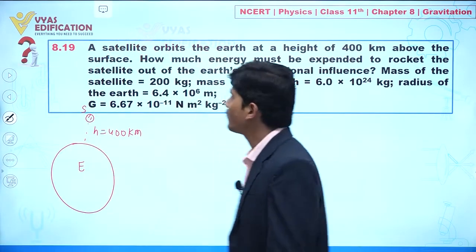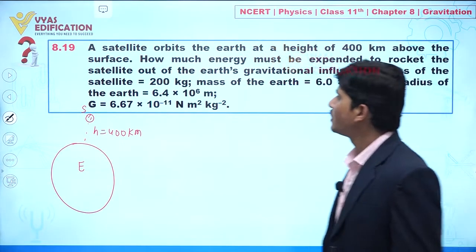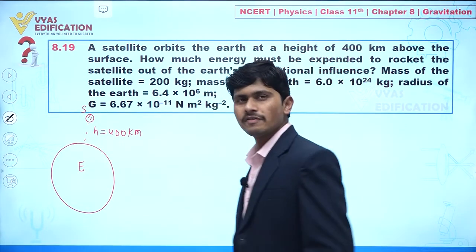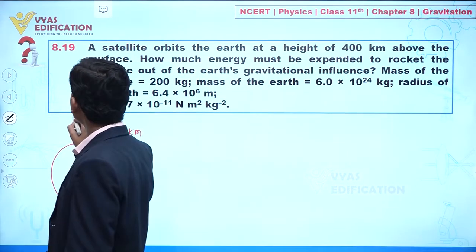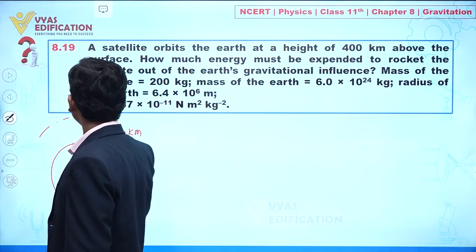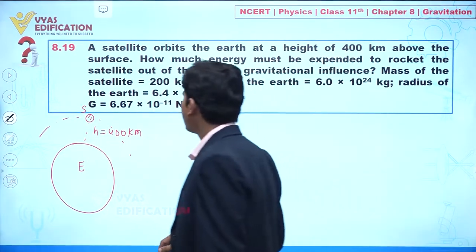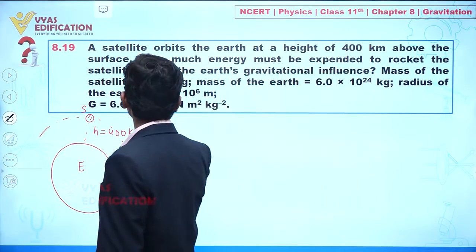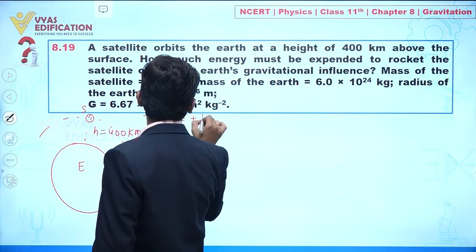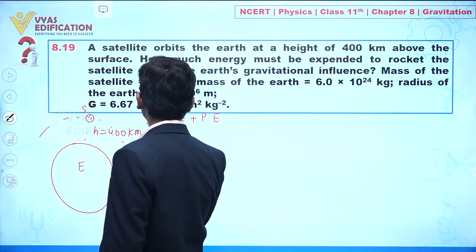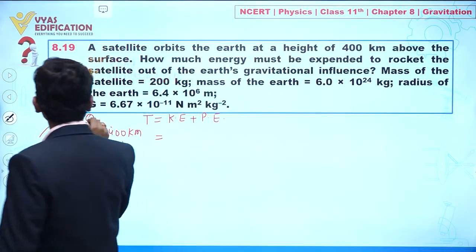How much energy must be expended to rocket a satellite out of Earth's gravitational field? First, can we find the total energy of the satellite? Yes, we can. Total energy equals kinetic energy plus potential energy.